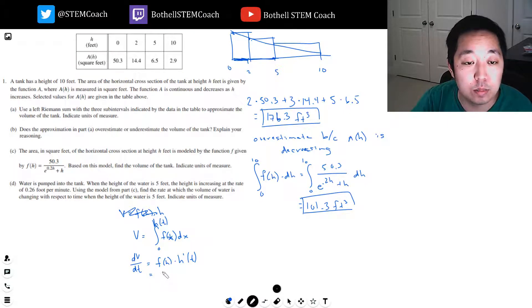F of H is simply 50.3. The H I'm plugging in, it's at 5 feet. So it's E to the 0.2 times 5 plus 5. And the derivative at that rate is 0.26. So, 0.26.